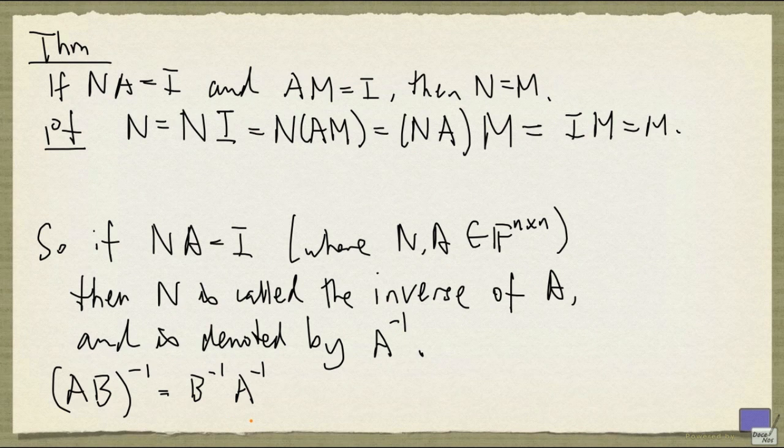Now, the second way to read it is to read it backwards. If A inverse and B inverse exists, then the inverse of AB also exists.